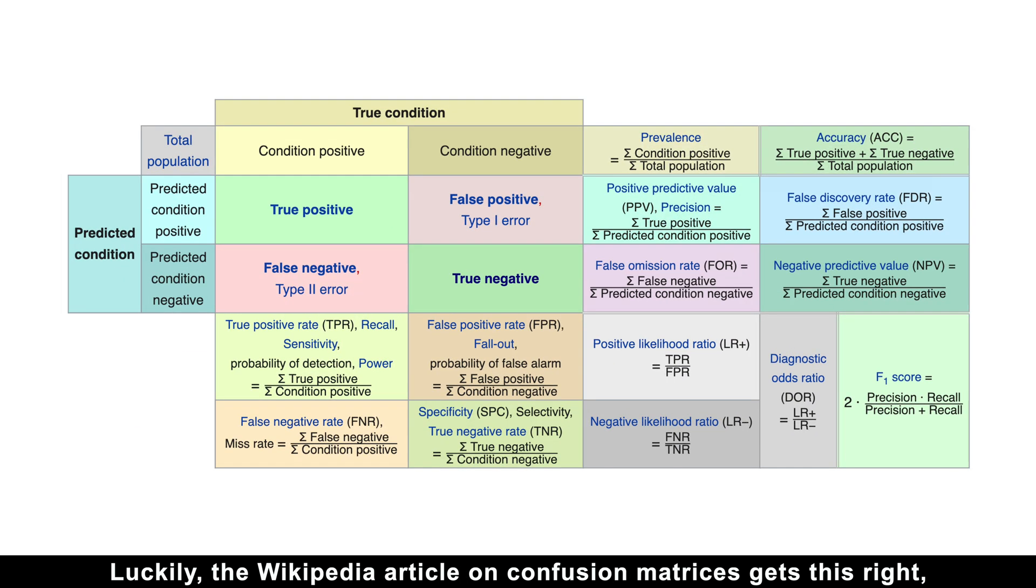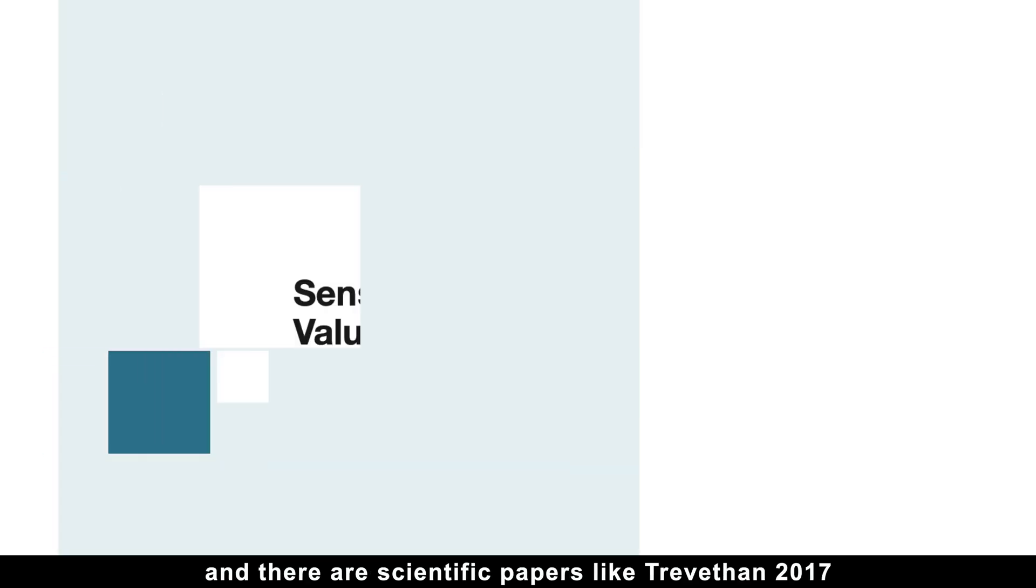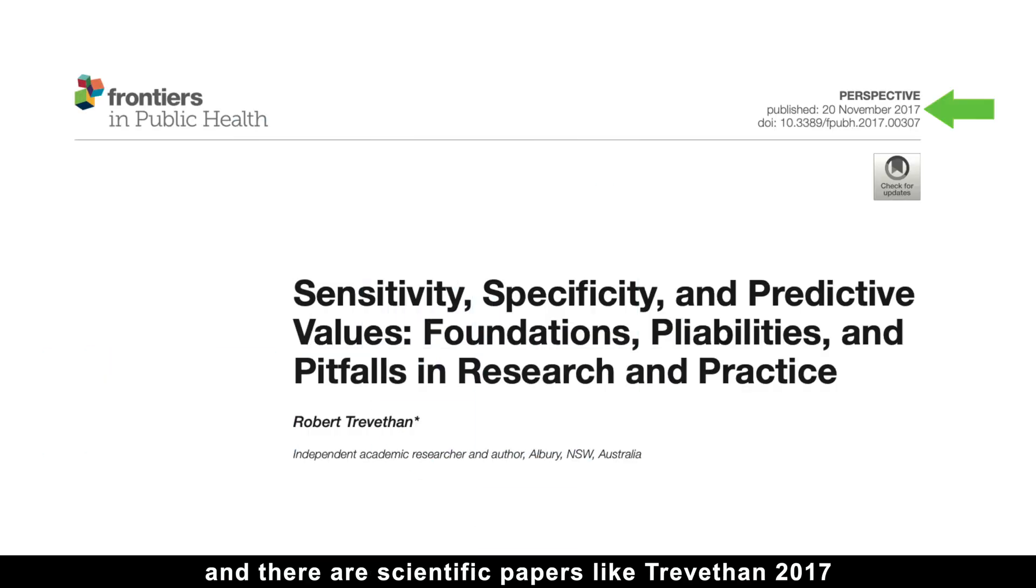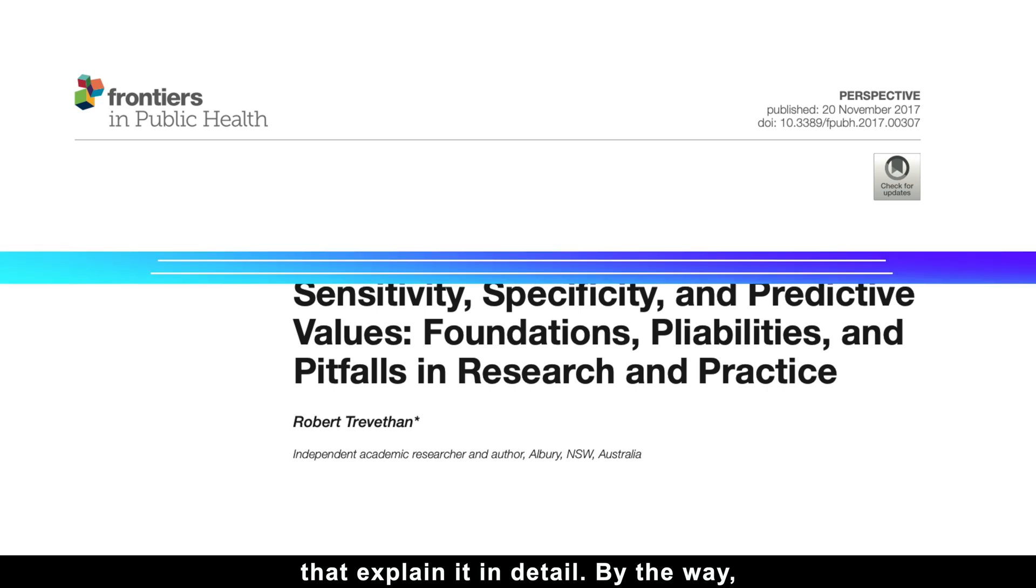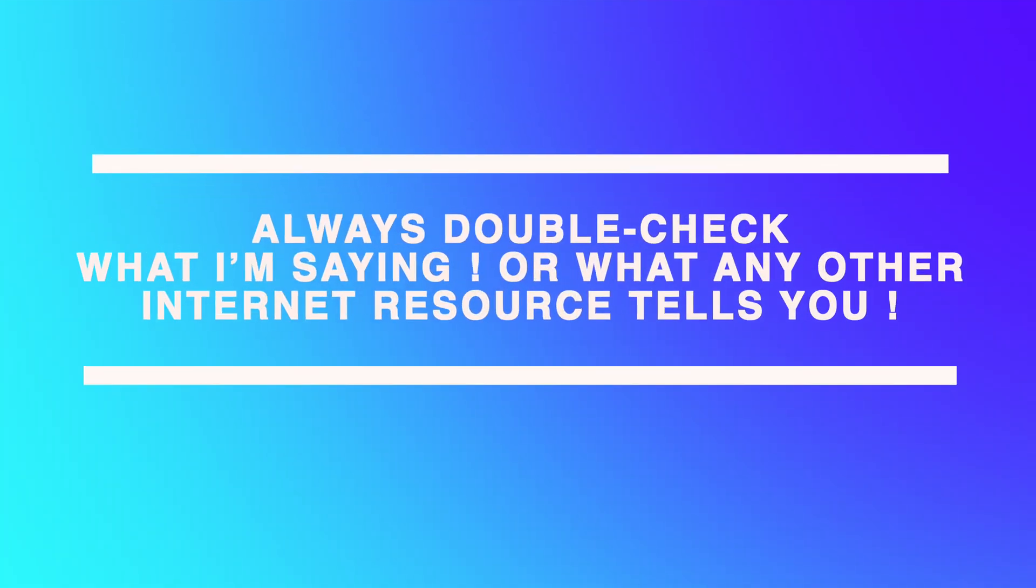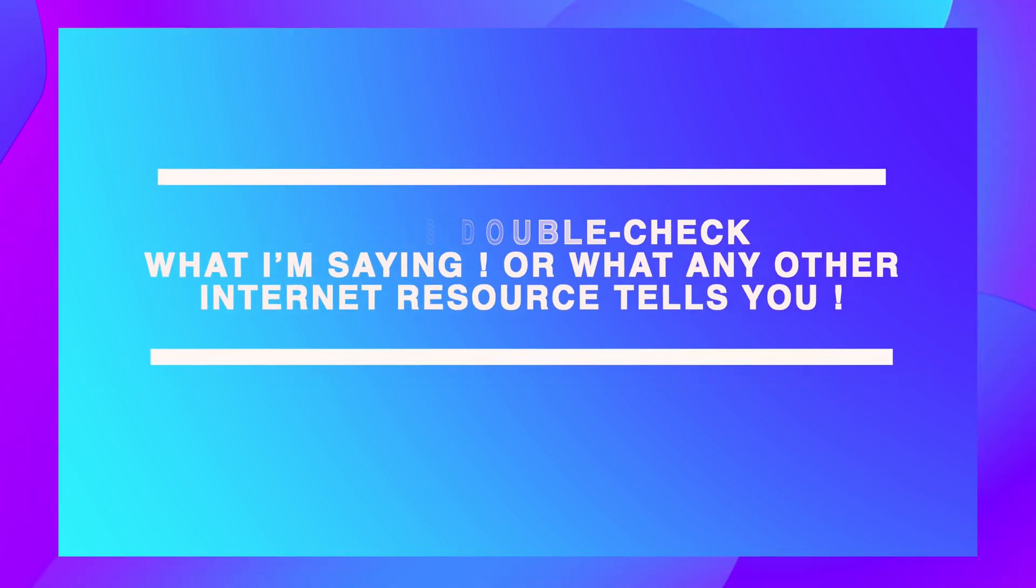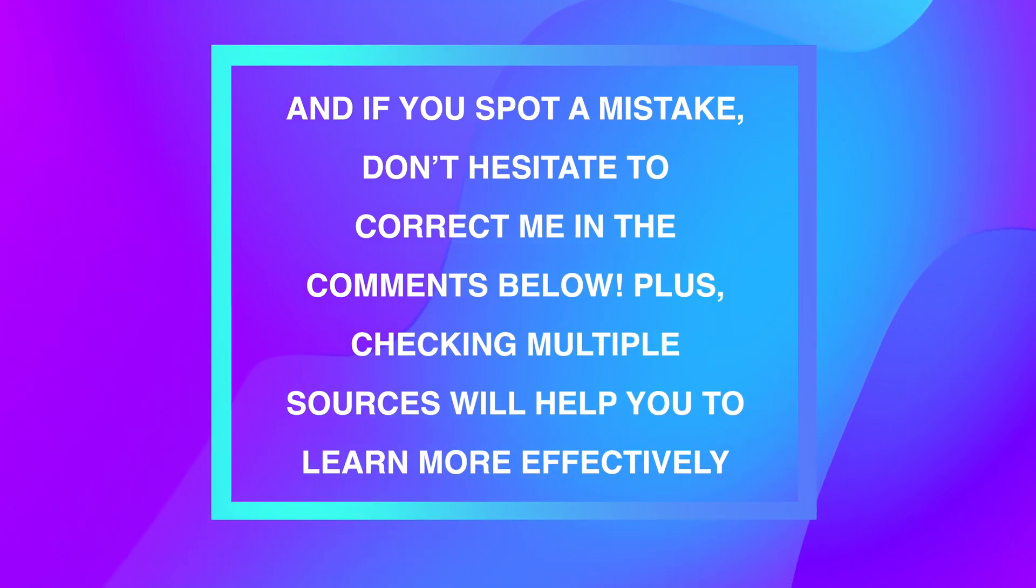Luckily, the Wikipedia article on confusion matrices gets this right, and there are scientific papers like Treviton 2017 that explain it in detail. By the way, always double-check what I am saying, or what any other internet resource tells you. And if you spot a mistake, don't hesitate to correct me in the comments below. Plus, checking multiple sources will help you to learn more effectively.